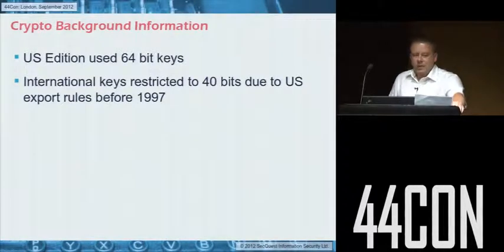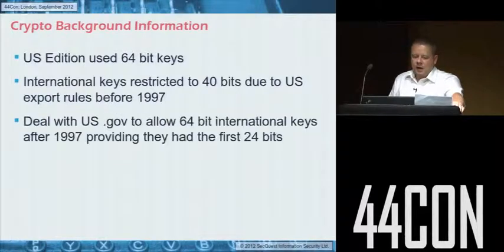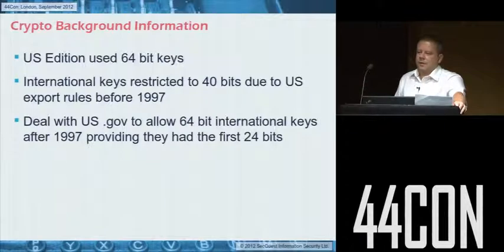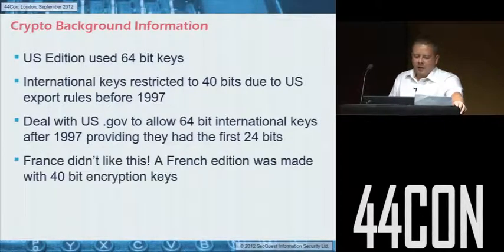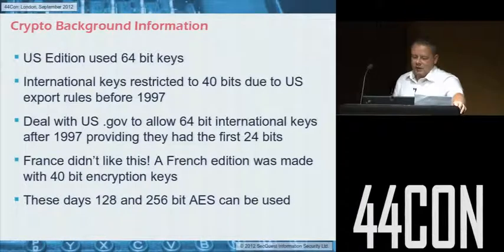A bit of background on the crypto. The US edition used 64-bit keys, but due to international restrictions on arms exports, they were limited internationally to 40 bits. A deal was done with the US government in 1997 to allow 64-bit keys internationally, providing that they had the first 24 bits — so the other 40 would be quite easy to crack in a day or two. The French didn't like this, so an international edition was made with 40-bit keys for the French market. These days you can use a lot stronger crypto.